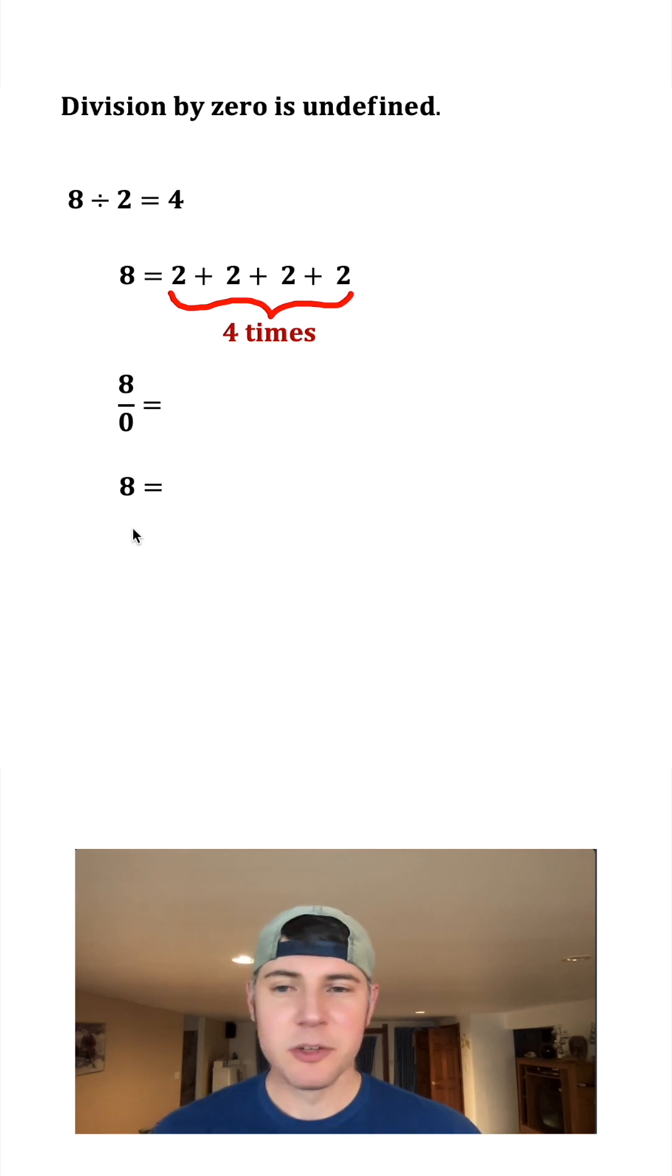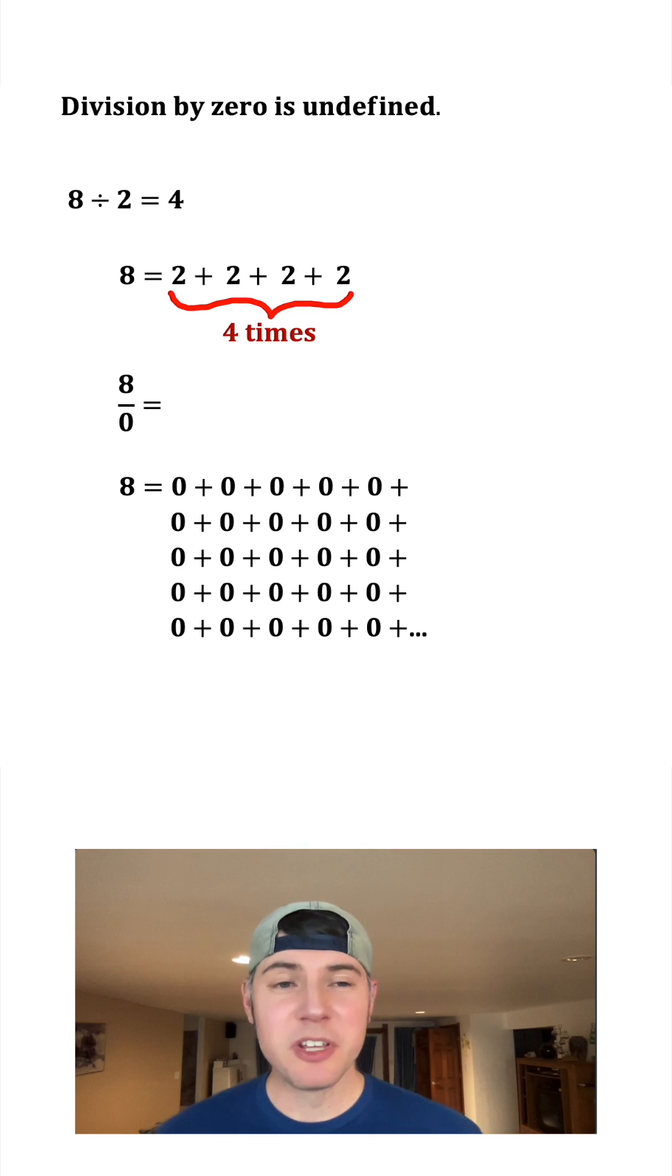If we do eight divided by zero, we can take the eight and do zero plus zero plus zero plus zero, and we'll be able to do this forever. You might wonder, why don't we just call it infinity? Because it's going to be an infinite number of zeros. Why is it that we call it undefined?